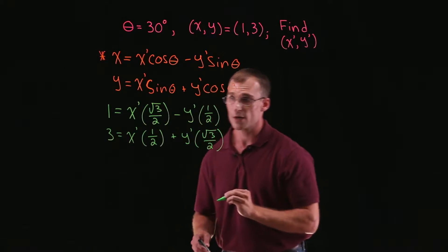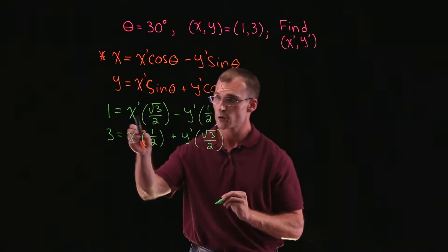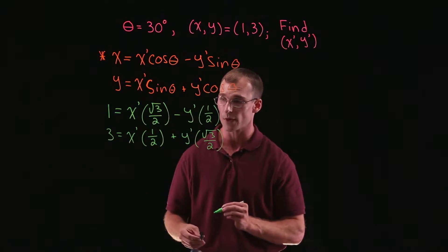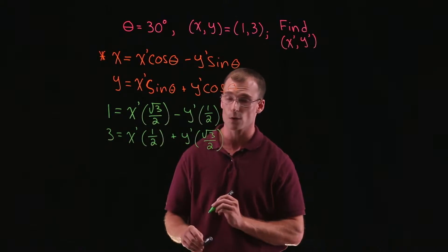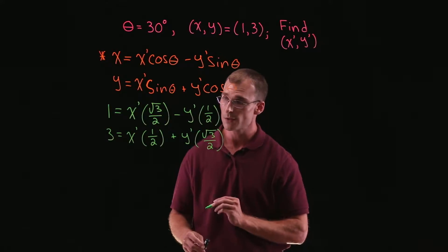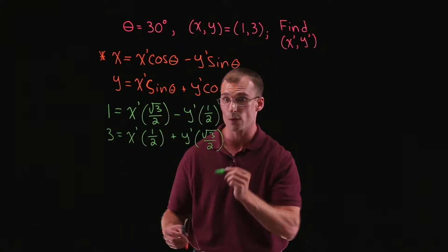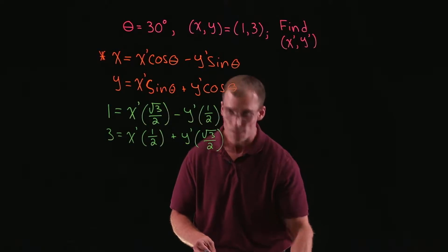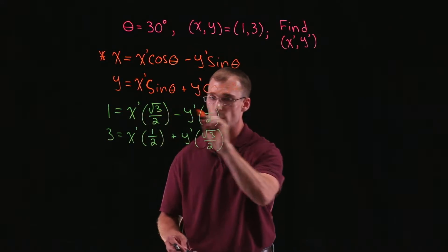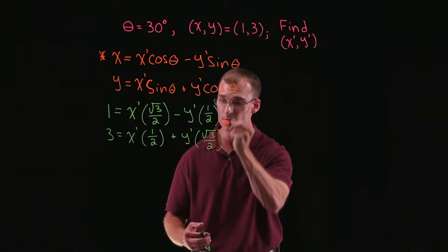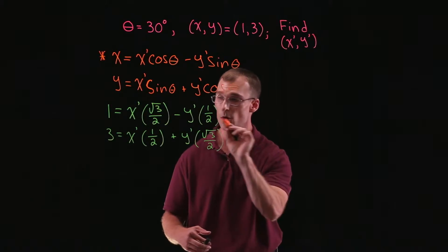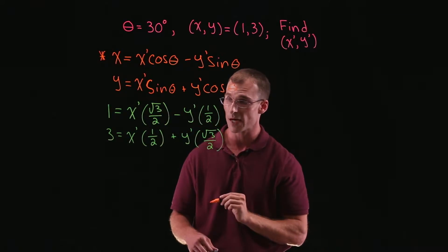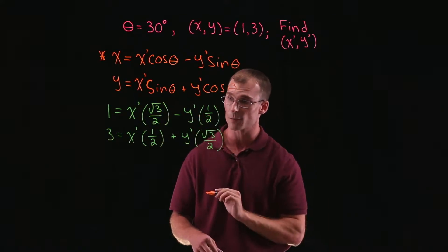So with this set of equations, what can we do? We have two unknown values that we want to find — x prime and y prime — but we have two equations to work with. One route is to solve this system of linear equations by multiplying through one equation by a value and then adding the two equations together.